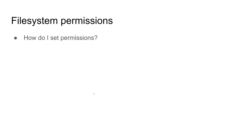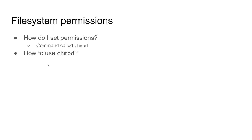So how do you set permissions on a file or directory? We get permissions when we create them, but what if we want to change them from the defaults? You use a command called chmod, short for change mode.